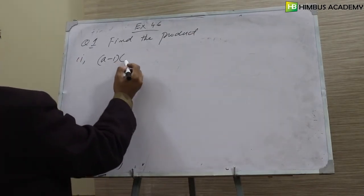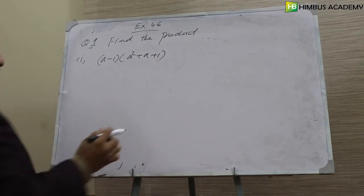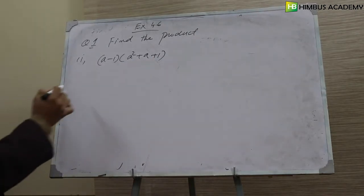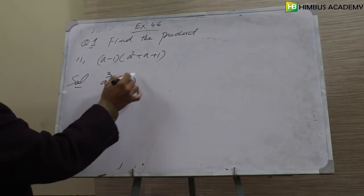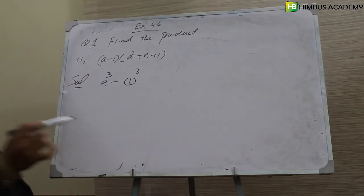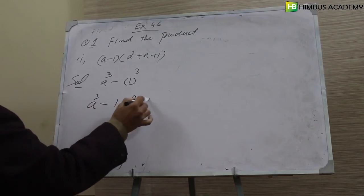A minus one, A square plus A plus one. This is a formula. By formula, this equals A cube minus one cube. So A cube minus one is the answer.